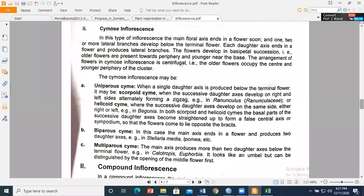Cymose inflorescence may be uniparous, biparous, and multiparous. If there is one daughter axis on one side, then we will call it uniparous. And there are two types: scorpioid cyme and helicoid cyme.